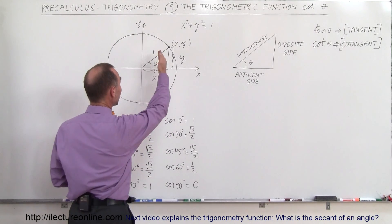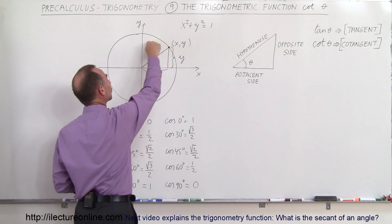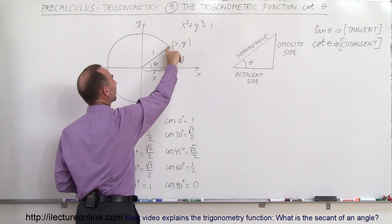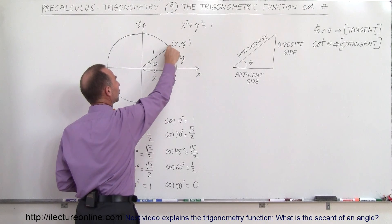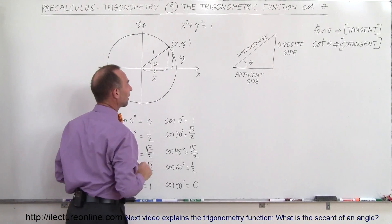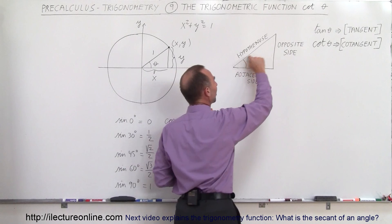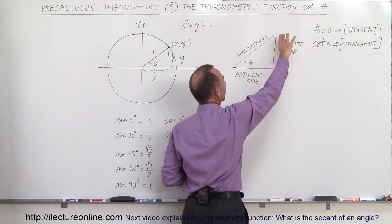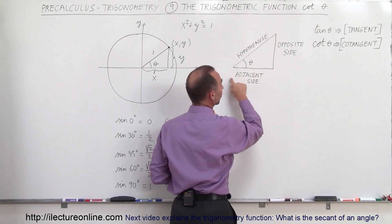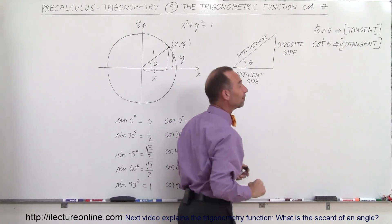Here again is the unit circle. Unit circle means that the radius is 1. If we have any point in the unit circle, we know that point will have an x-y value. The y value is equal to the distance from the x-axis to the point, and the x value will be the distance from the y-axis to the point. If we take this same triangle and draw it over here, we notice this is the hypotenuse, there's the opposite side to angle theta, and there's the adjacent side to angle theta, because the adjacent side is adjacent to the angle and the opposite side is opposite to the angle.